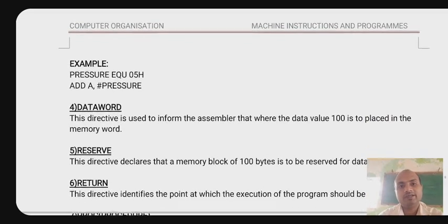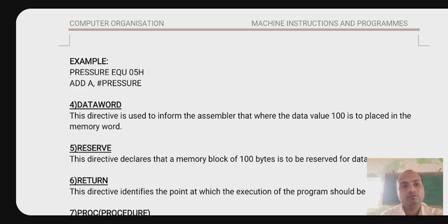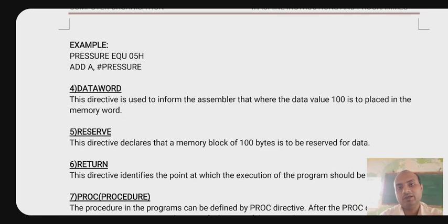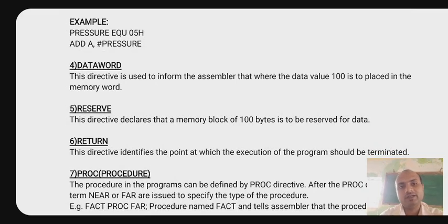The data directive is used to inform the assembler where a data value is to be placed in memory. This directive declares that a memory block of 100 bytes is to be reserved for data.